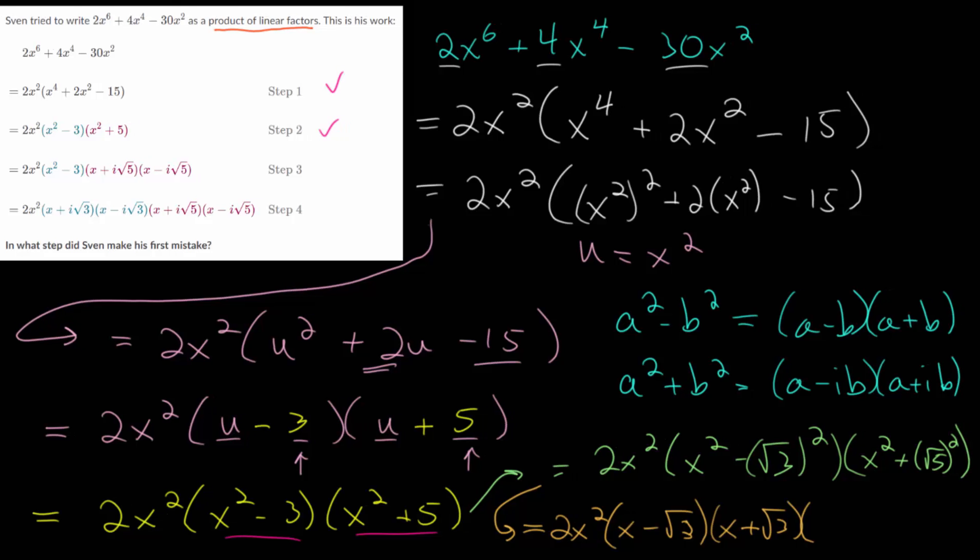With this one, we have that sum of squares, so we'll end up with imaginary numbers. But it works similarly to the difference of squares where we essentially ignore the squares now. We put in i, so we have x plus i root 5, and then x minus i root 5. So this right here is the fully factored expression that we started with.